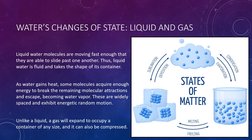In the liquid state, water molecules are still tightly packed, but they move fast enough to slide past one another. As a result, liquid water is fluid and takes the shape of its container. As liquid water gains heat, some molecules acquire enough energy to break the remaining molecular attractions and escape from the surface, becoming water vapor. Water vapor molecules are widely spaced and exhibit very energetic, random motions. Unlike a liquid, a gas will expand to occupy a container of any size and can also be compressed — for example, you can put more and more air into a tire, but you can't put 10 gallons of gasoline into a 5-gallon can.